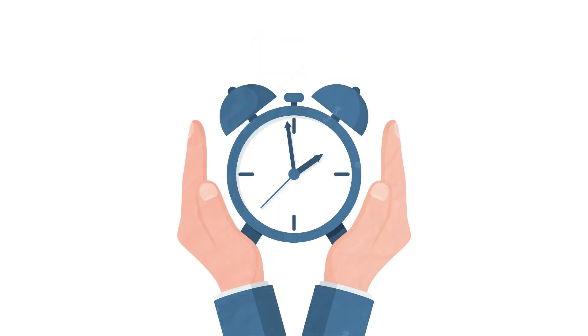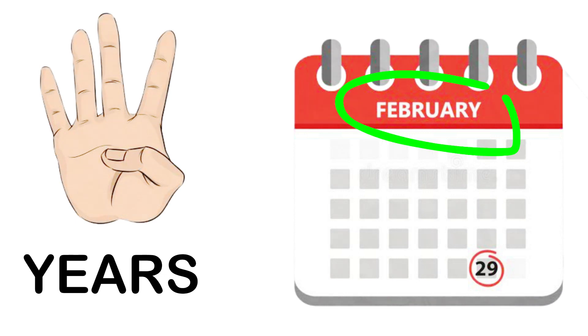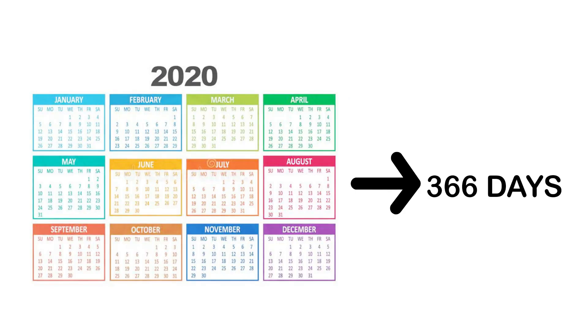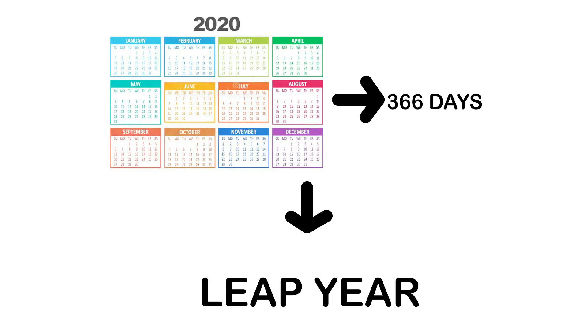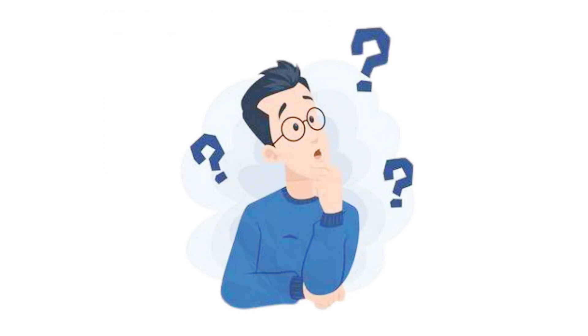This surplus day is added to the month of February. Thus, every fourth year, February is of 29 days instead of 28 days. Such a year with 366 days is called a leap year. Find out when will the next leap year be.